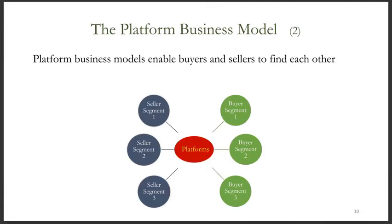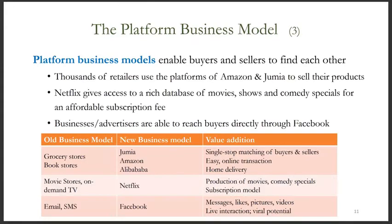The platform business model enables buyers and sellers to find each other in one place — the major function of platforms is facilitating matchmaking. E-commerce companies such as Amazon and Jumia provide a platform where thousands of retail businesses sell to customers directly. Netflix gives access to a rich database of movies, shows, and comedy specials for an affordable subscription fee. Facebook and Google enable business advertisers to reach consumers.